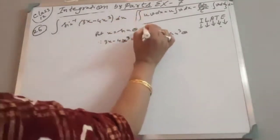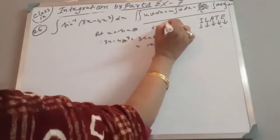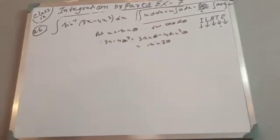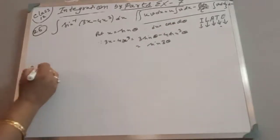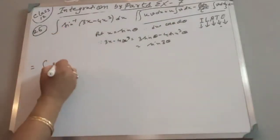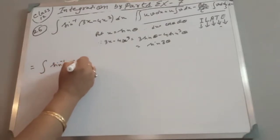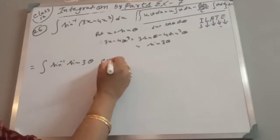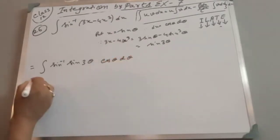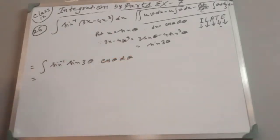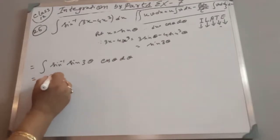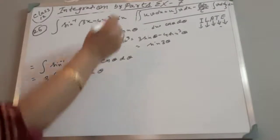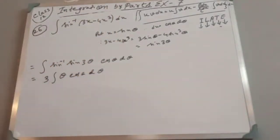With x = sin θ, dx = cos θ · dθ. Therefore the integral becomes ∫3θ · cos θ · dθ = 3∫θ cos θ · dθ. Now we apply the UV rule.